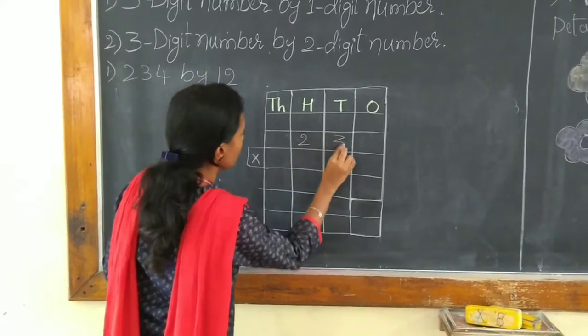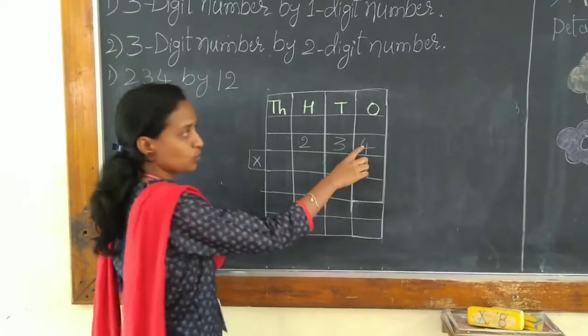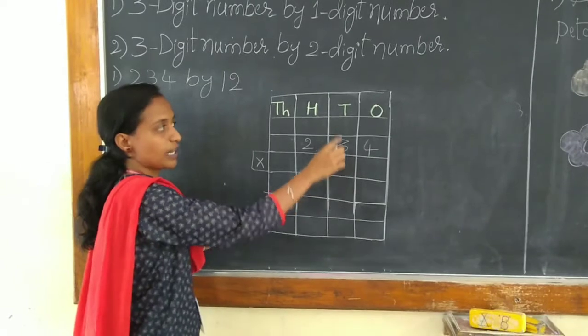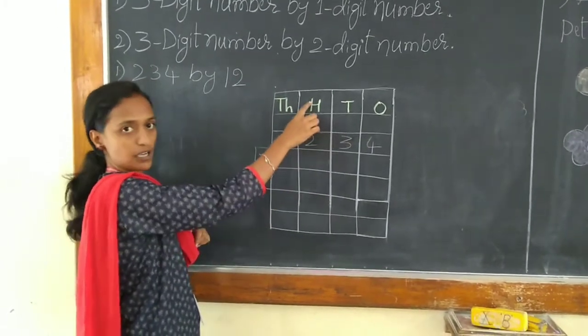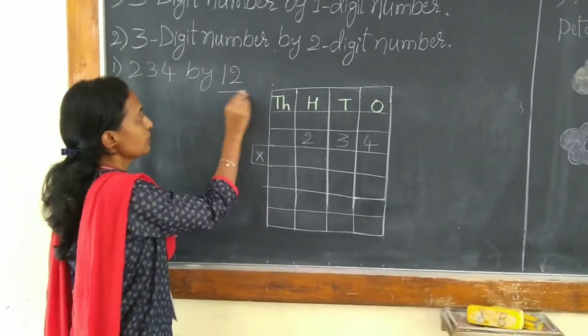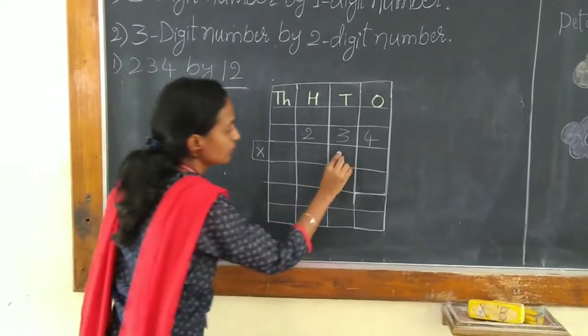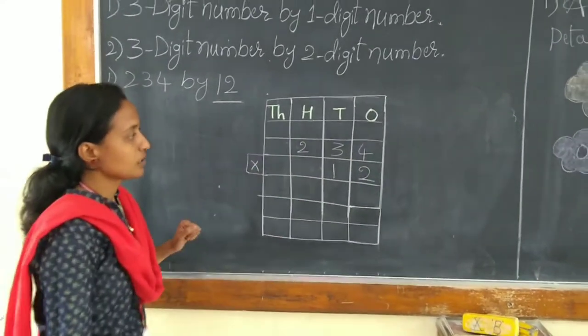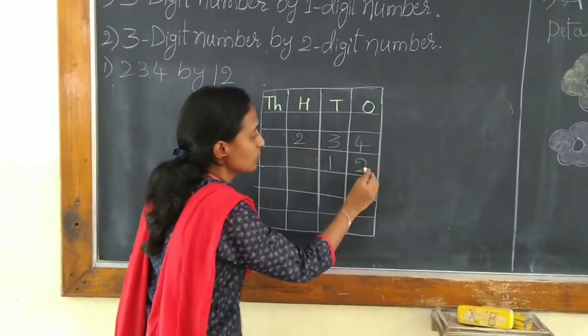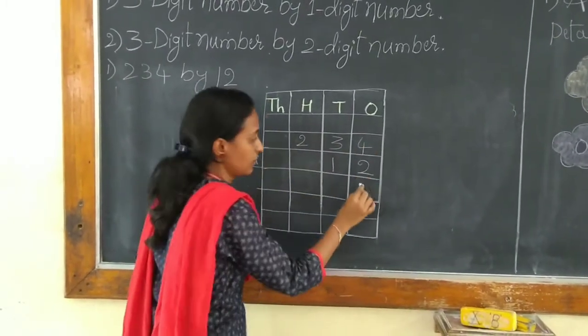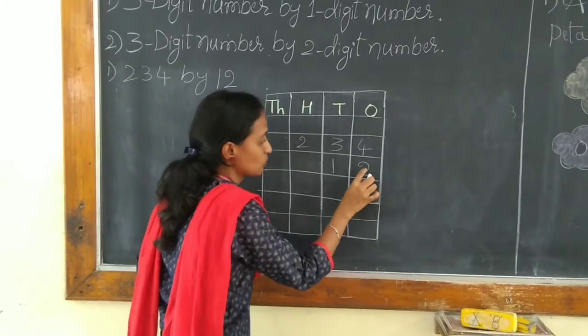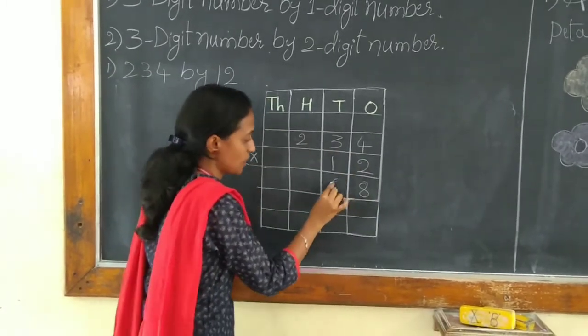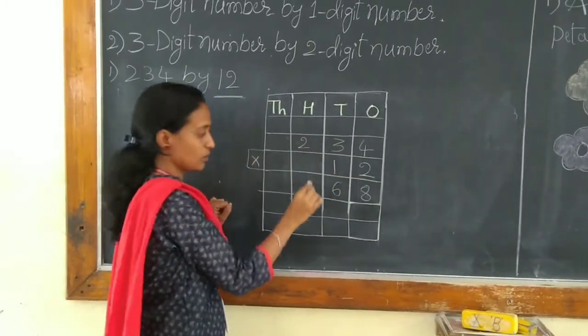4 we have to place at the 1's place. 3 at the 10's place. 2 at the 100's place. And here we have given multiplier 12. So, let us multiply the numbers. 2 times 4 is 8. 2 times 3 is 6. 2 times 2 is 4.